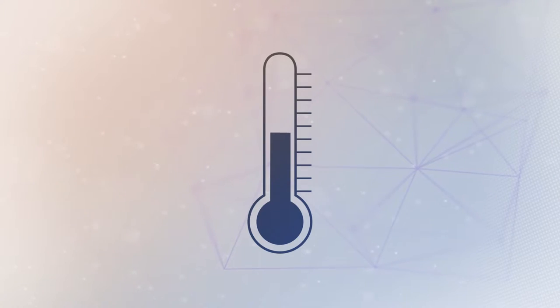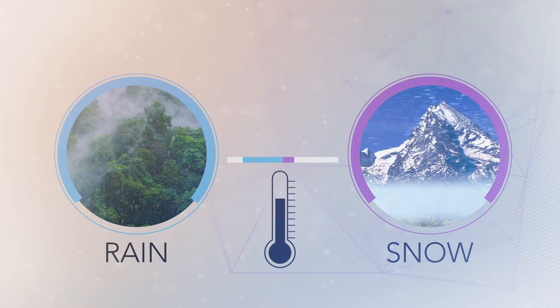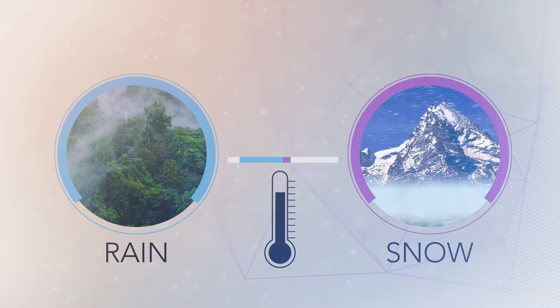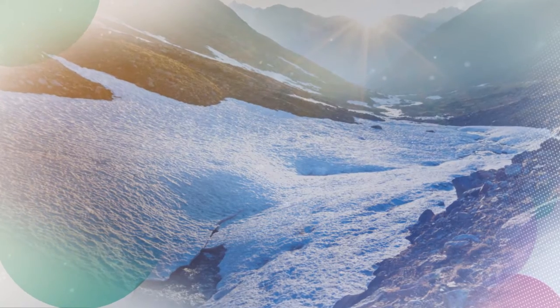Warmer temperatures will also cause more precipitation to fall as rain rather than snow. An earlier arrival of spring-like conditions leads to earlier peaks in snowmelt and resulting river flows. In areas dependent on the gradual melting of snowpack to supply surface water through the warm months, this means seasons with the highest water demand, typically summer and fall, are impacted by a reduced availability of fresh water.